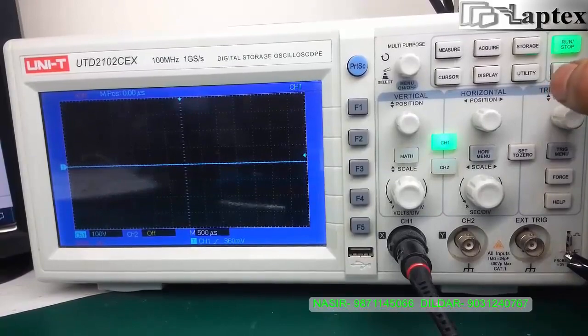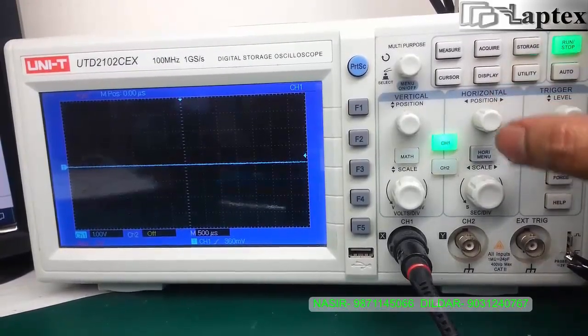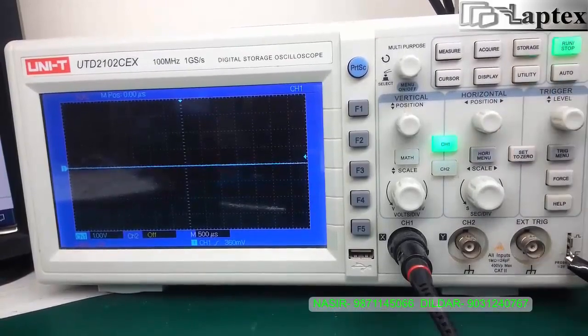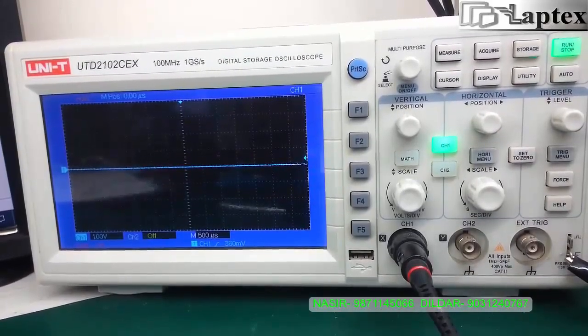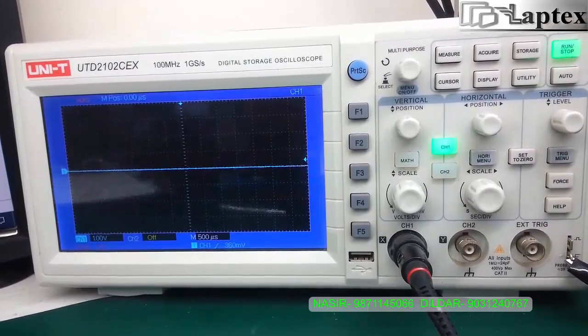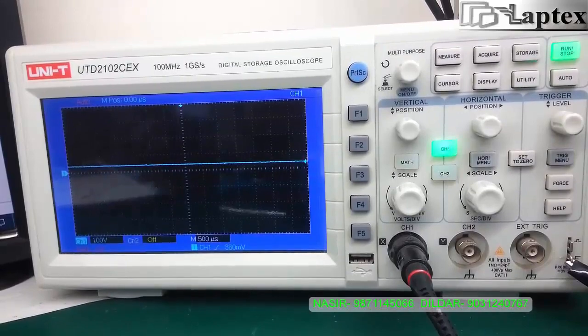This trigger level is used when you are capturing any signal. Say you have a very microsecond signal that you want to capture and analyze whether it is working well or not. Then you have to use this trigger point. We'll discuss later when we use the capture mode.